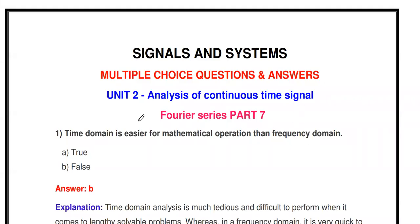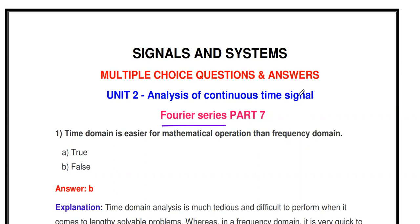Welcome to my channel. In this video, the objective type questions and answers are from the topic: Analysis of Continuous Time Signal using Fourier Series. This topic is tested from Unit 2 of Signals and Systems. The previous six videos covering Unit 1 multiple choice questions are already available on the channel.